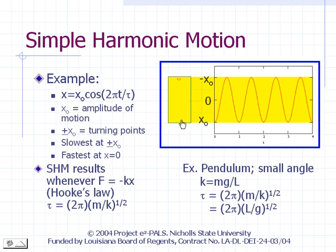At time equal to zero, the object is located at x0. The particle moves toward x equals zero and speeds up in the process — the steepest slopes in the plot occur when x equals zero. Once the object passes x equals zero, it slows down and eventually stops when it reaches negative x0. The object speeds up again as it moves back toward x equals zero, slows down when it passes x equals zero, and stops when it reaches x0. This completes one cycle of motion.